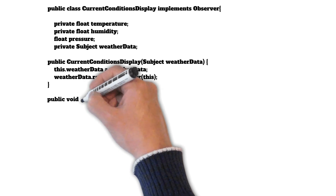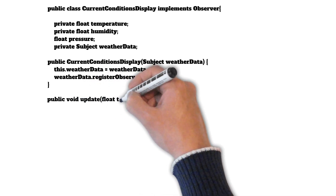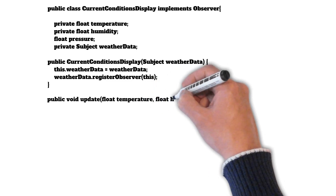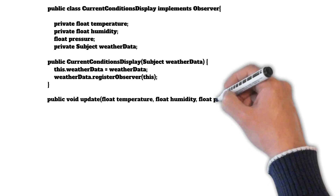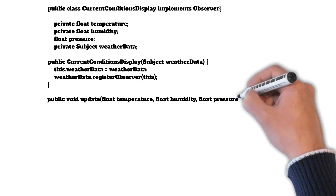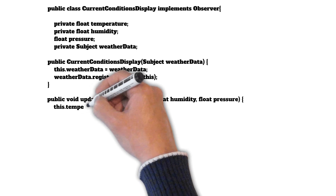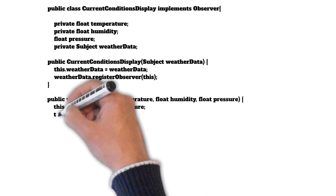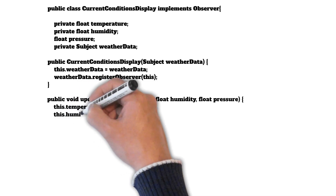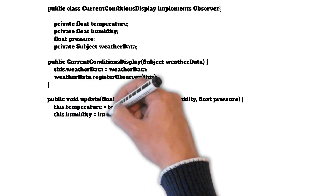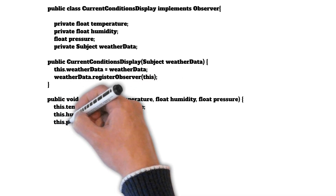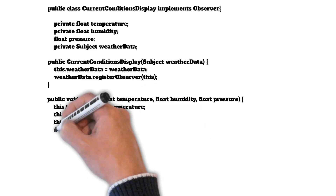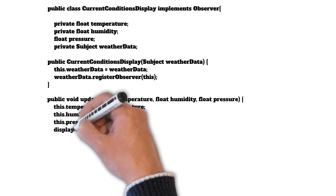We also have the update method, which the subject will call whenever there is a modification in the value of temperature, humidity, or pressure. It passes the updated values to the update method so they can be updated in the display element. Whatever we want to do with these updated values we can do — for example, this particular observer prints them using the display method.